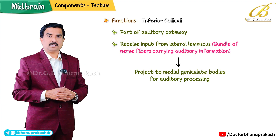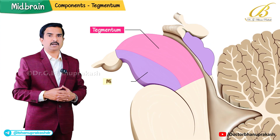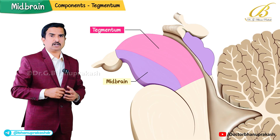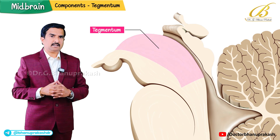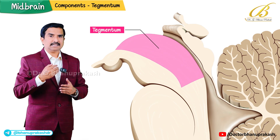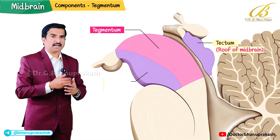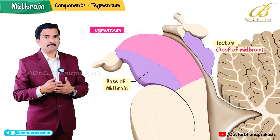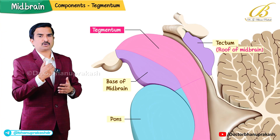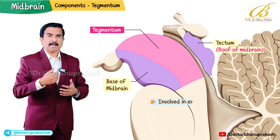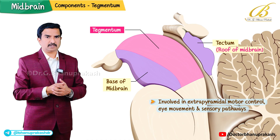Now we will focus on the tegmentum of the midbrain, which plays a vital role in sensory processing and motor function. The tegmentum is located between the tectum, the roof of the midbrain, and the base of the midbrain, extending from the midbrain to the pons. It contains several key structures involved in extrapyramidal motor control, eye movement, and sensory pathways.